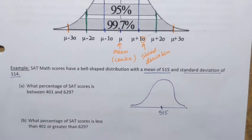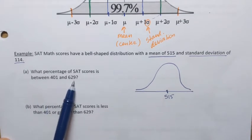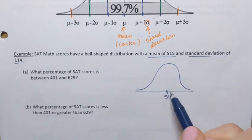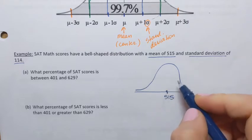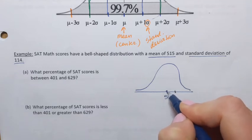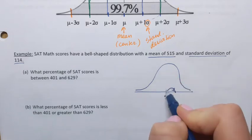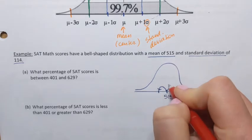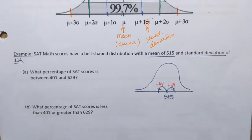As we read this problem, we need to figure out what that range is — specifically, how far those values are from the mean, in terms of how many standard deviations away. Let's see what happens if we make one step to the right and one step to the left, where each step equals one standard deviation. That means adding 114 and subtracting 114 from the mean.